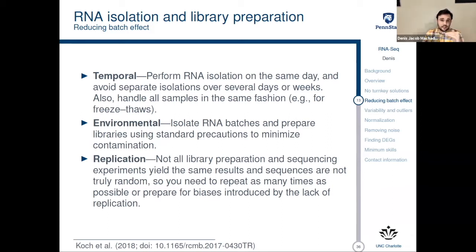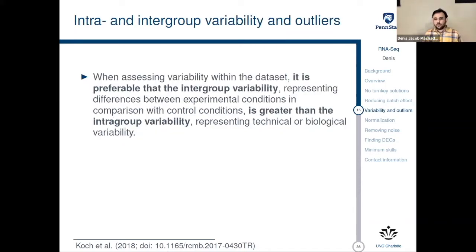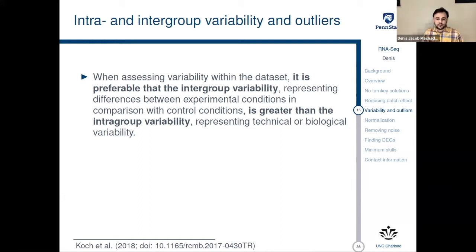When we are talking about replication at the level of RNA isolation and library preparation — that is, before sequencing — if you can, you would like to prepare libraries for the same sample several times, repeating that experiment two or three times. It would be ideal to budget for that. During the sequencing run, you want to control experimental conditions and be sure that you are sequencing everything together, including the controls. For intra- and intergroup variability, you want the intergroup variability to represent differences between experimental conditions, and it is preferable that intergroup variability be greater than intragroup variability, accounting for both technical and biological variability.